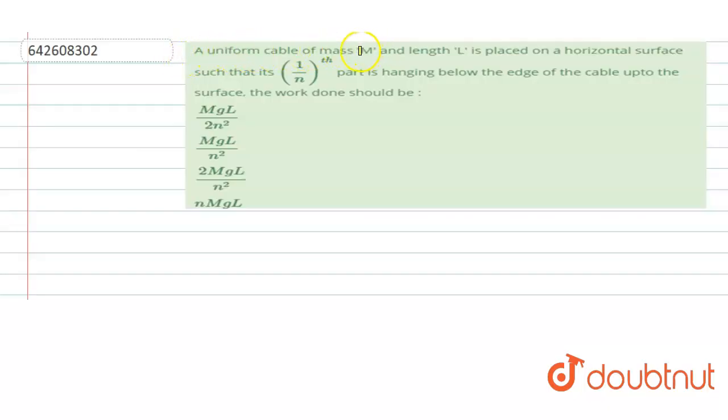uniform cable of mass M and length L is placed on the horizontal surface such that 1 by nth part is hanging below the edge of the cable up to the surface. We have to find the work done. These are the options.